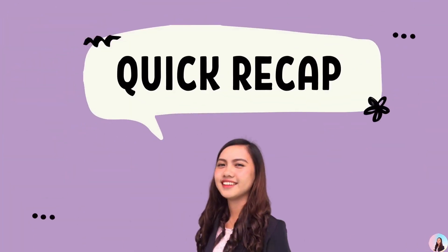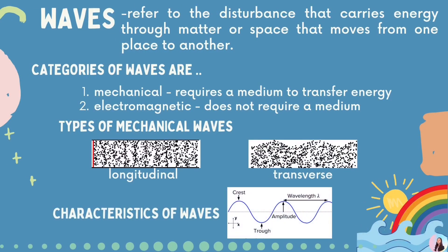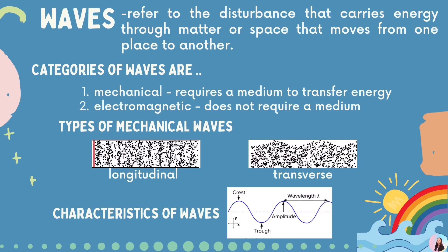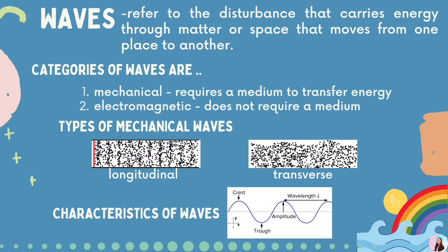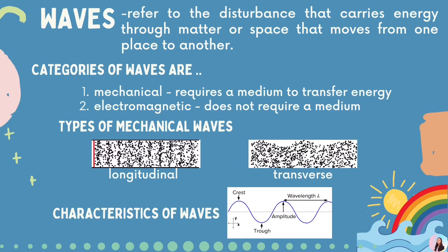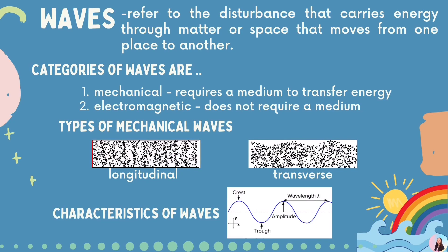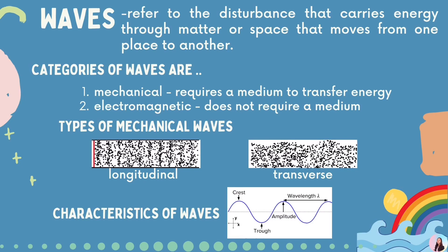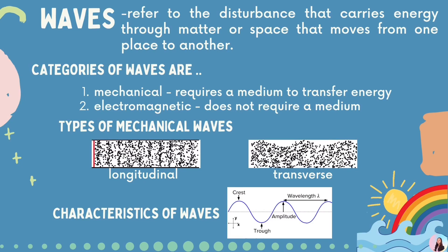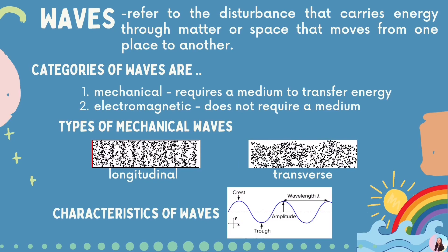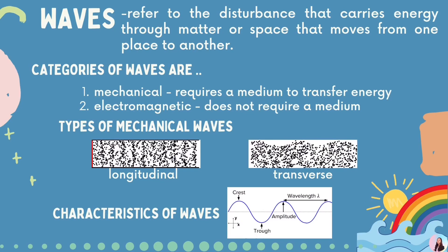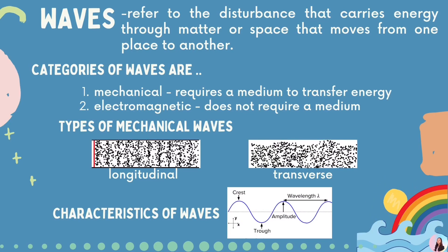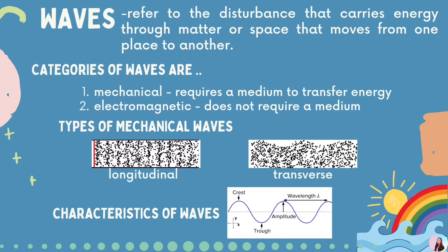Let us have a quick recap. In this video, we discussed waves. The categories of waves are: a mechanical wave, which requires a medium to transfer energy, and an electromagnetic wave, which does not require a medium. The types of mechanical waves are longitudinal wave and transverse wave. And the characteristics of waves.